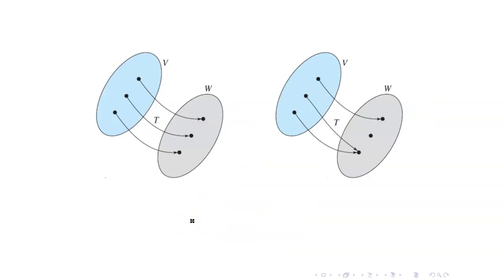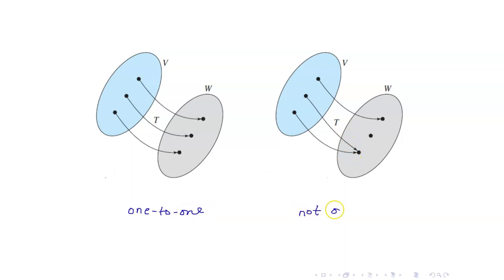Here is a diagram of two linear transformations. For the first diagram, T here is 1-to-1, whereas in this case, this is not 1-to-1 because here you have two different elements in V that go to the same element in W.